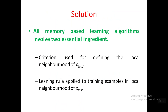All memory-based learning algorithms have two essential ingredients. First, a criterion used for defining the neighborhood of x_test — that is, defining based on what the output should be zero or one. Second, the learning rule applied to the training examples in the local neighborhood of x_test — determining in which way we can say that x_test is near to a particular class.